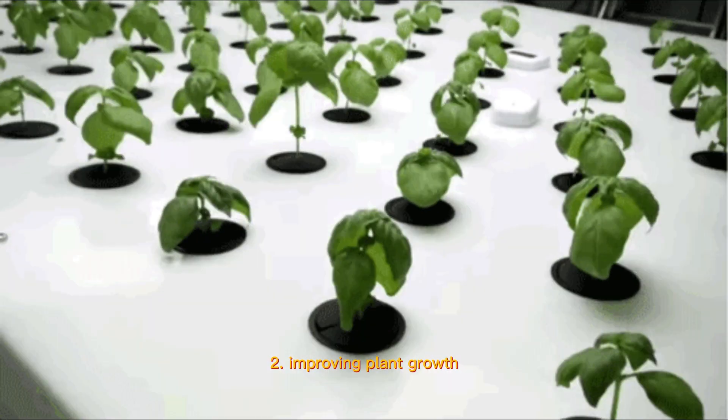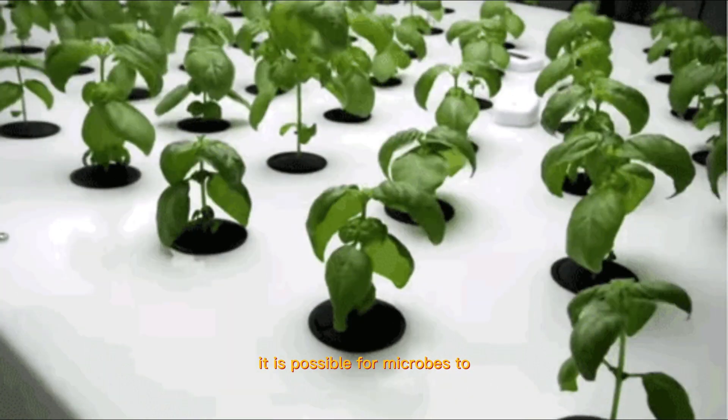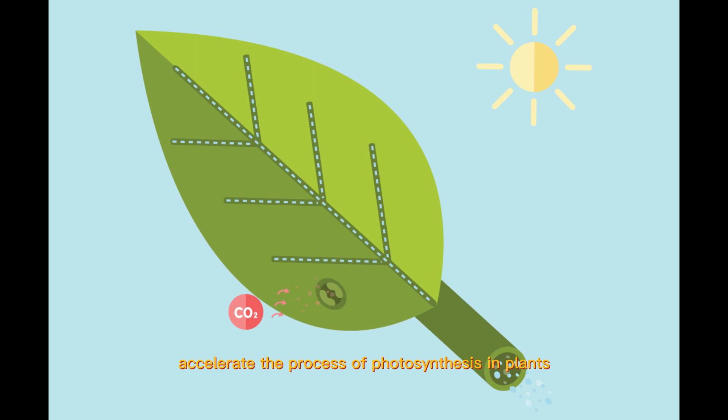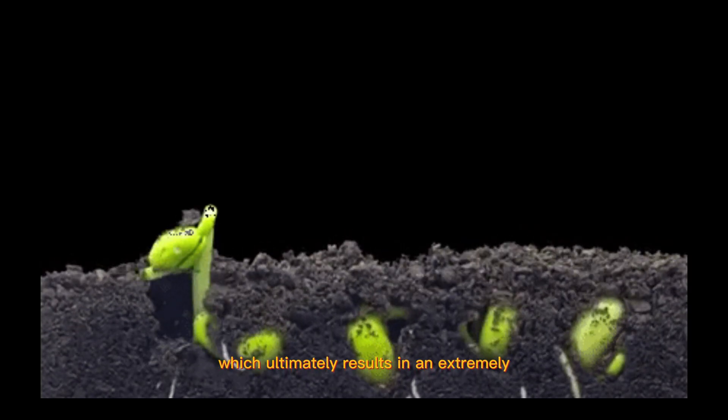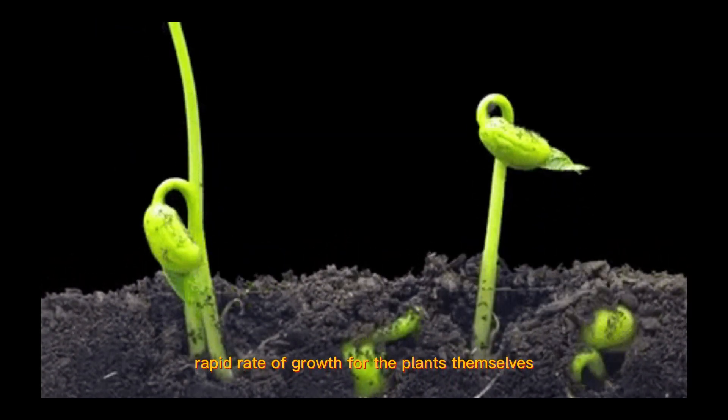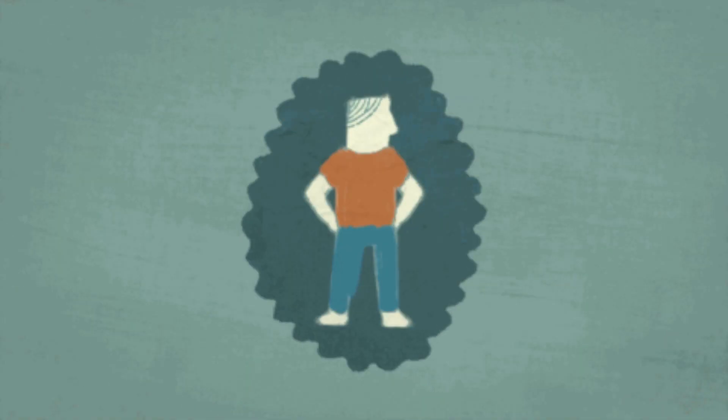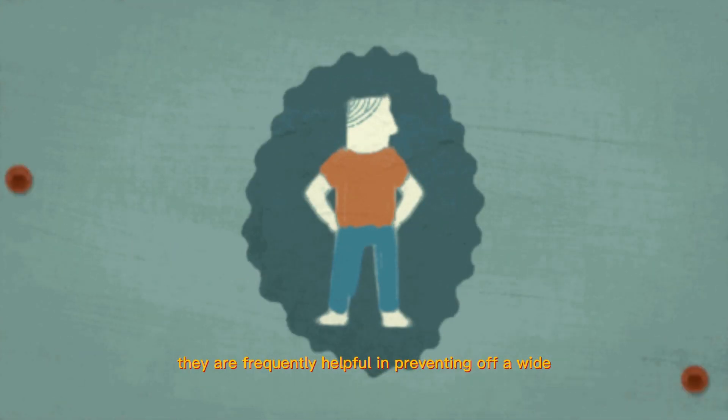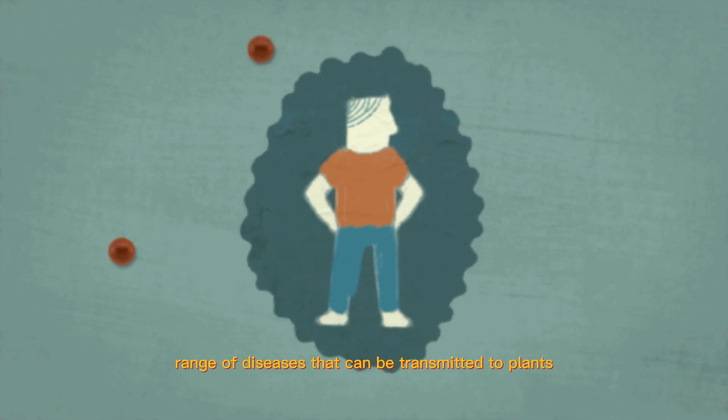2. Improving plant growth. It is possible for microbes to accelerate the process of photosynthesis in plants, which ultimately results in an extremely rapid rate of growth for the plants themselves. In addition to this, they are frequently helpful in preventing a wide range of diseases that can be transmitted to plants.